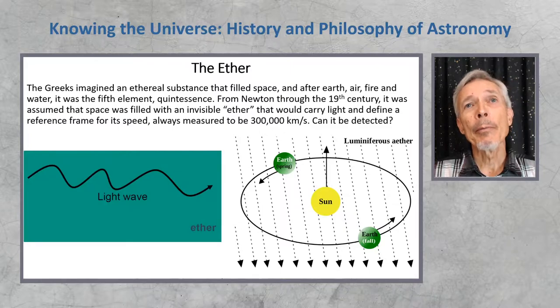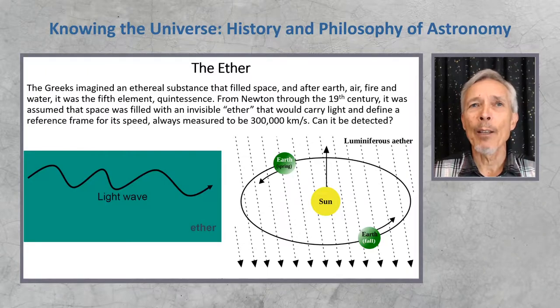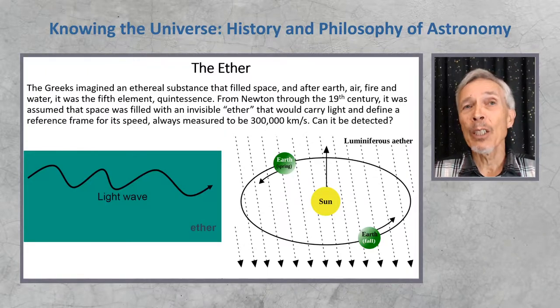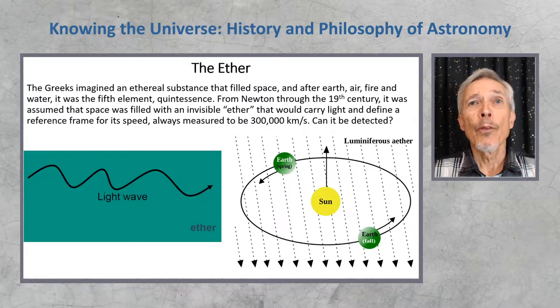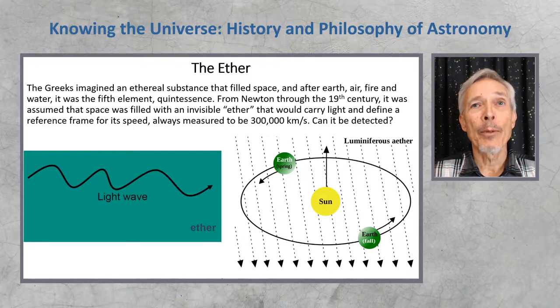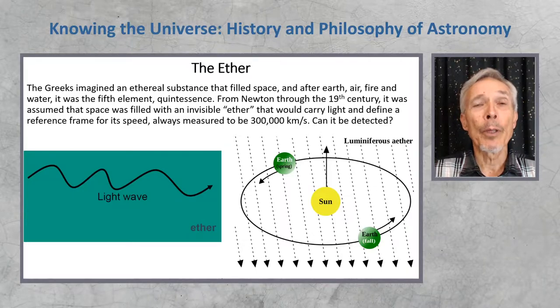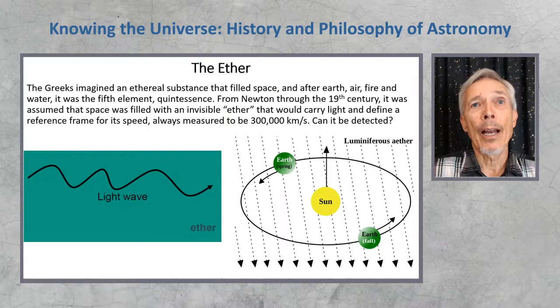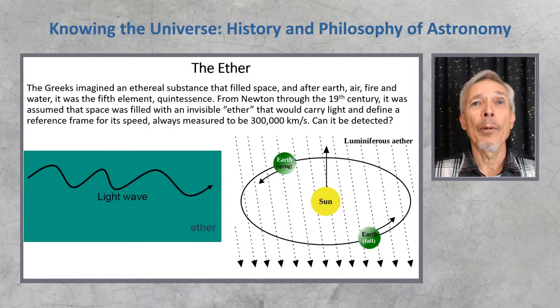Until this time, the only way people had understood the mechanism of electromagnetic radiation, especially as it travels through the vacuum of space, was to imagine that space was filled with an ethereal substance called the ether. The ether was supposed to fill space and the cosmos, and after earth, air, fire, and water, it was actually the fifth element, quintessence, from ancient Greek times. So from ancient Greek times, through Newton, into the 19th century, it was always assumed that space was filled with ether, and this invisible ether would carry the light and define the reference frame for its universally constant speed, 300,000 km per second.